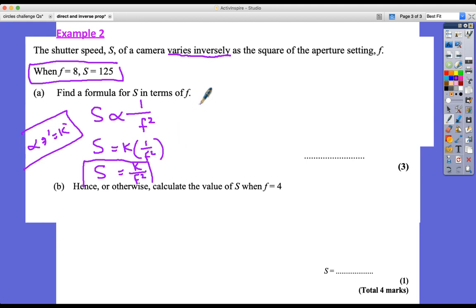So 125 is s, equal to k over 8 squared. So 125 equals k over 64. So we've just got to multiply those two things, times both sides by 64. What's 125 multiplied by 64? It's 8,000, so k equals 8,000. And so the final answer, if we put those two things together, put the k into here, we get s equals 8,000 divided by f squared. And we're done.